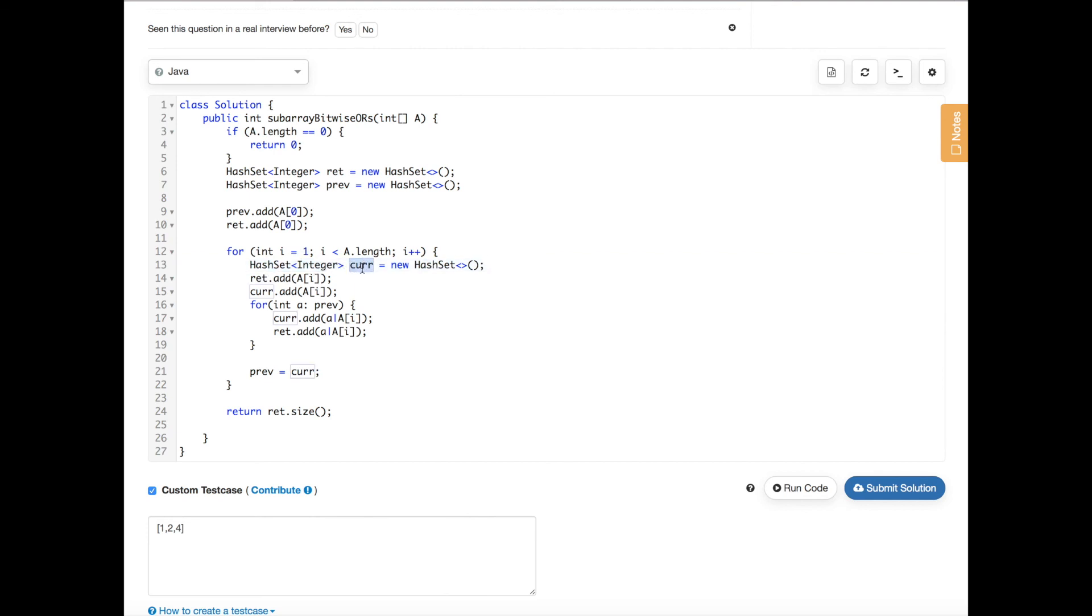Then for each element in the array except the first one, we're going to use a new hash set called current. We're going to add a[i] to the return set and current because we know that a[i] should be one possible unique answer.